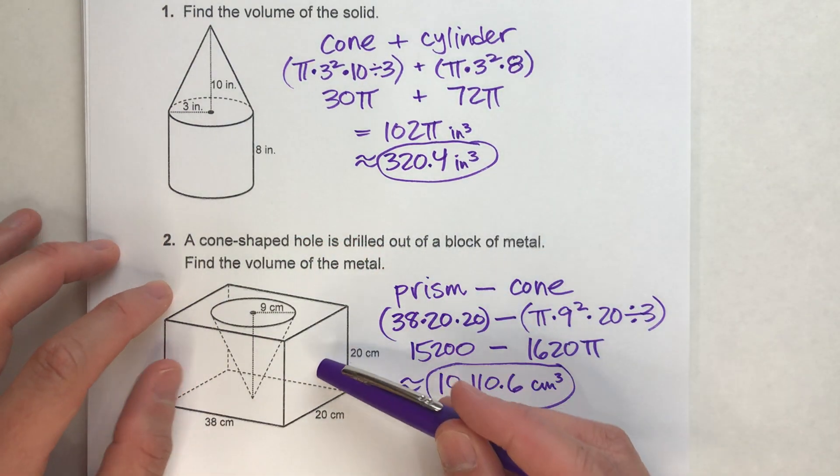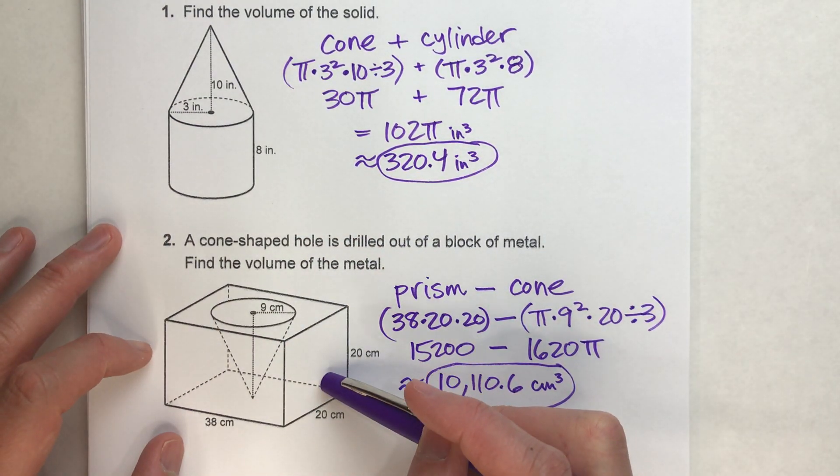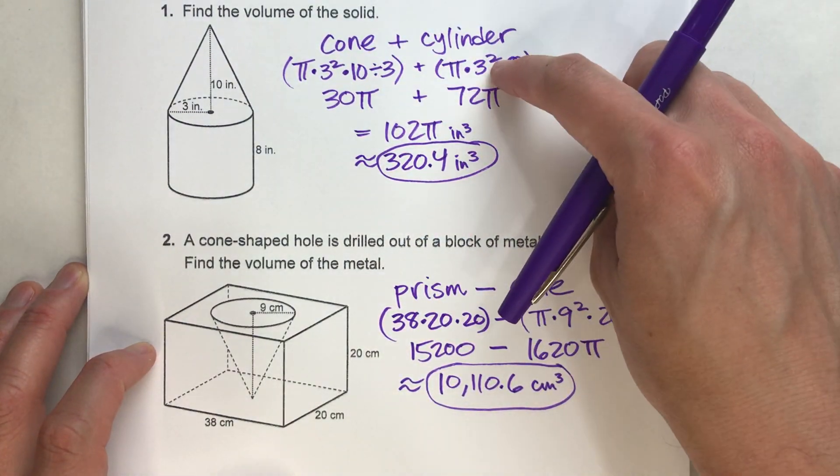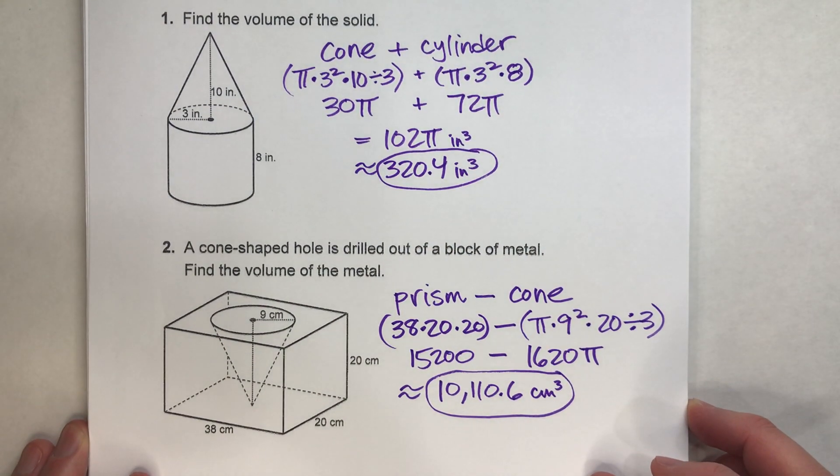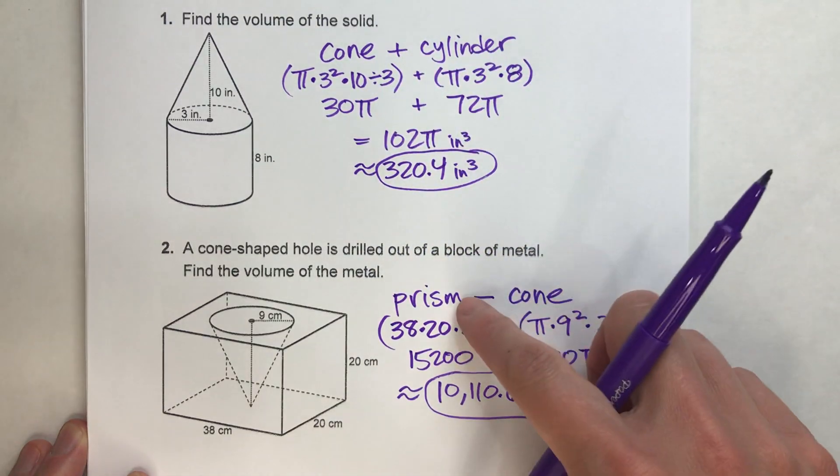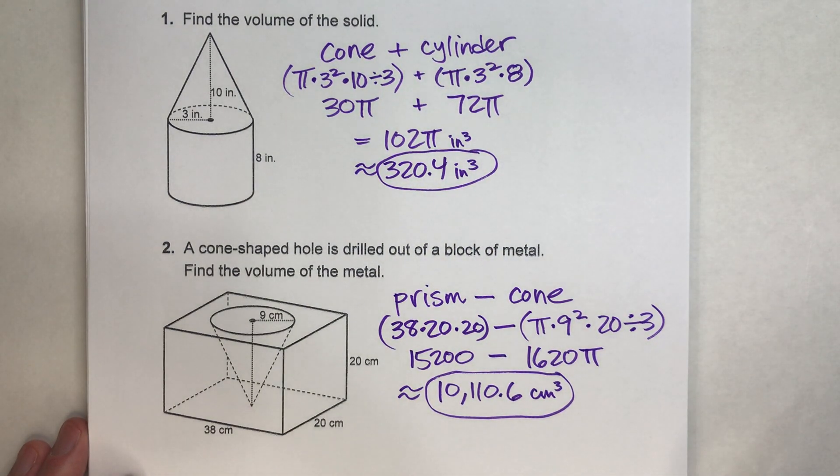Or maybe it's two pieces but need to be subtracted. But once you figure out what those pieces are, use your volume formulas, and then either add up those volumes or subtract them to find your composite volume.